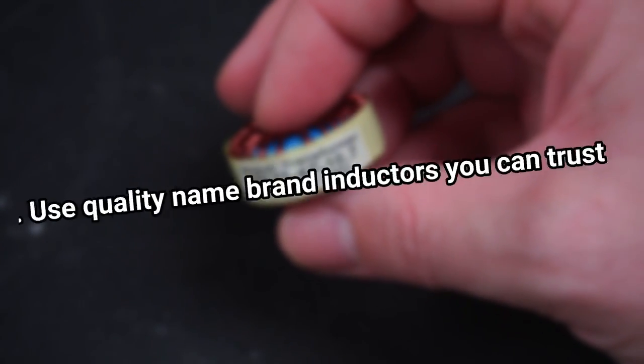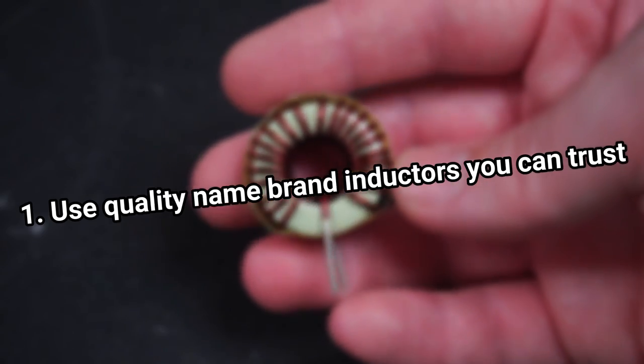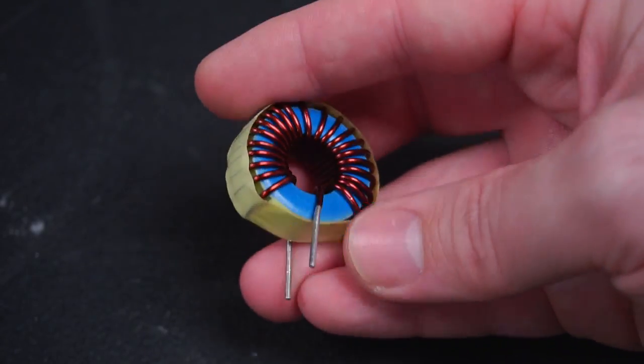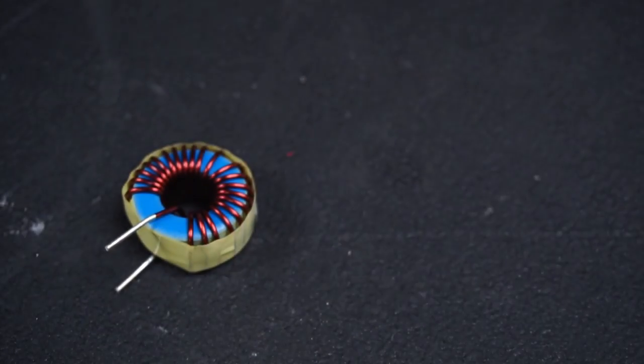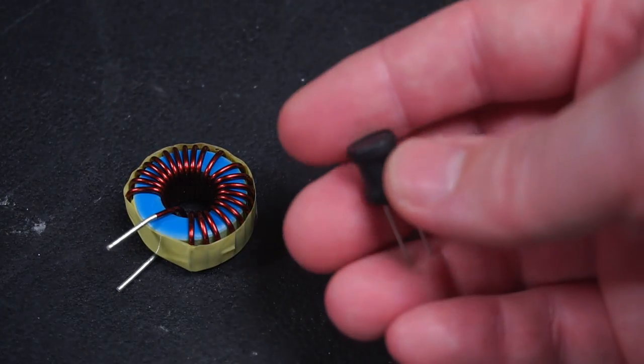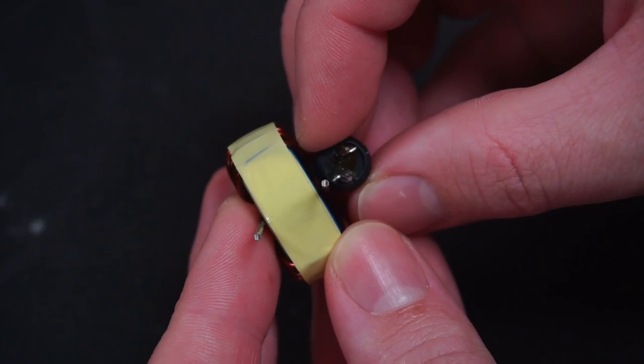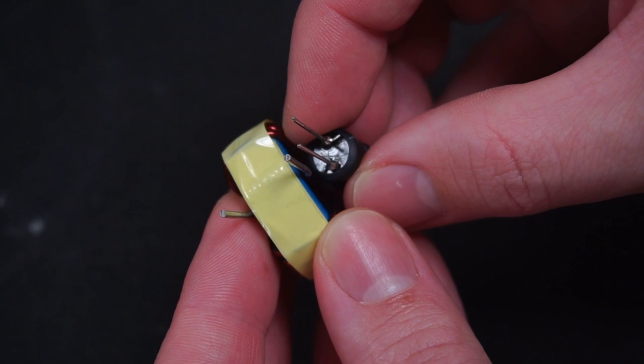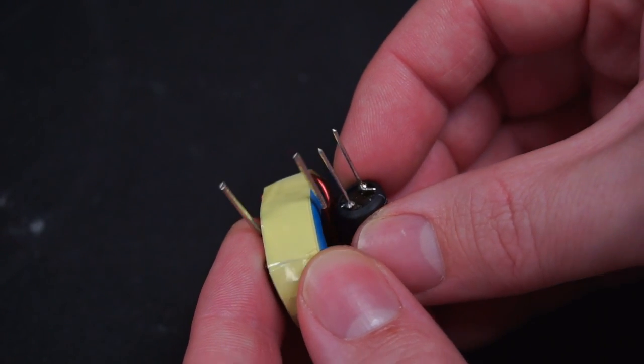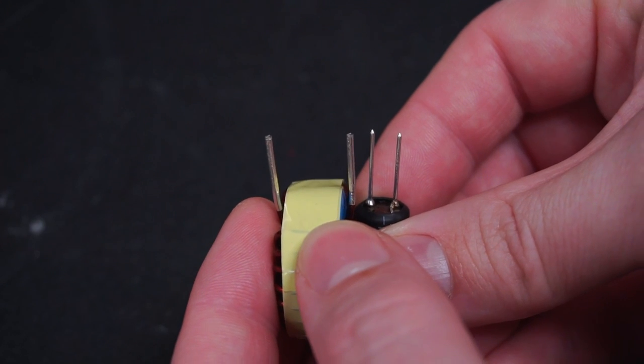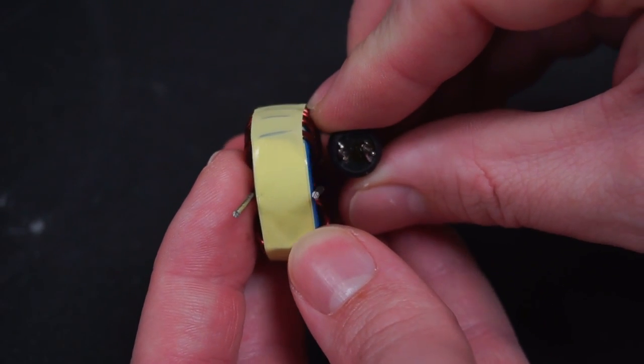Tip 1: Use quality name brand inductors you can trust. The green toroid inductor here is a quality name brand item with a price to match. The cheap and no name black inductor uses wire that is too thin for the current specified in the datasheet and the inductor core is constructed from ferrite which is the wrong material for this application. So buy quality inductors.